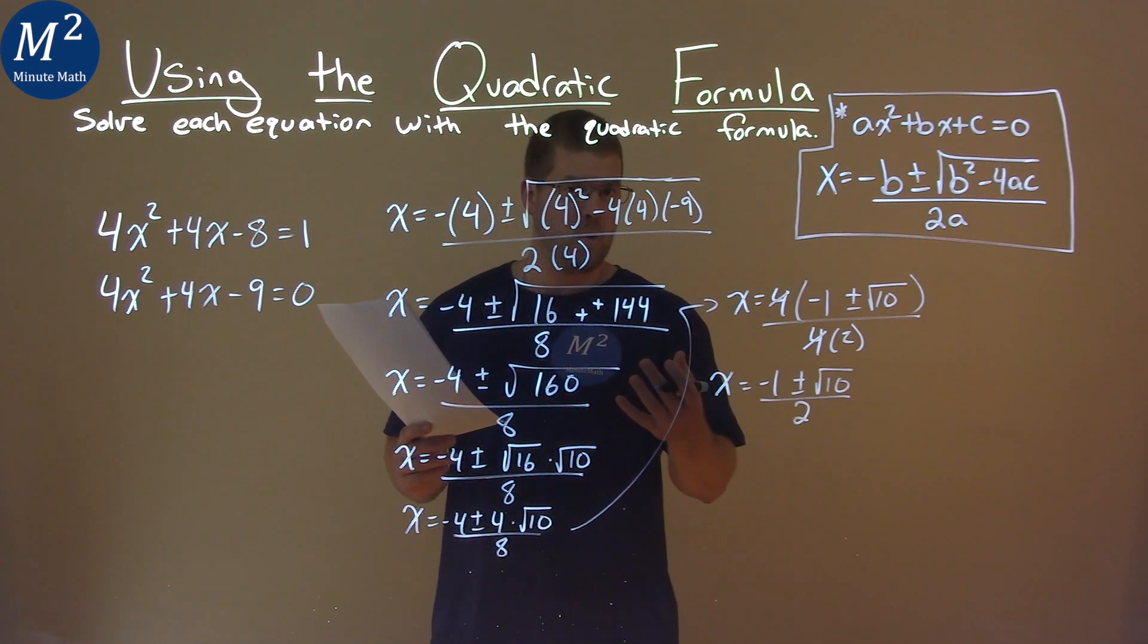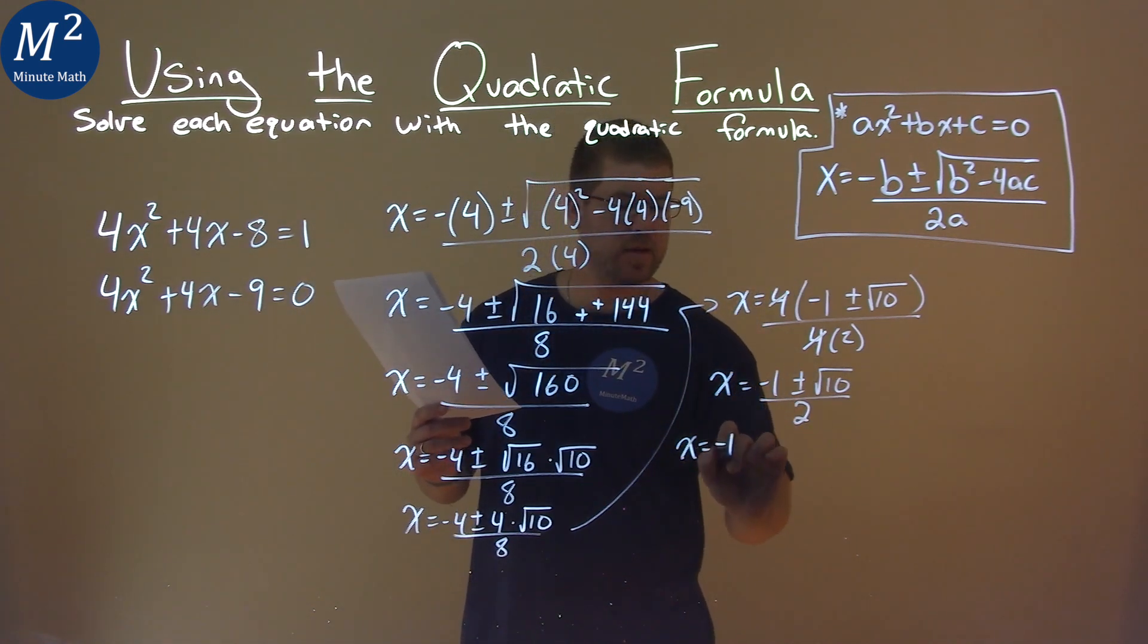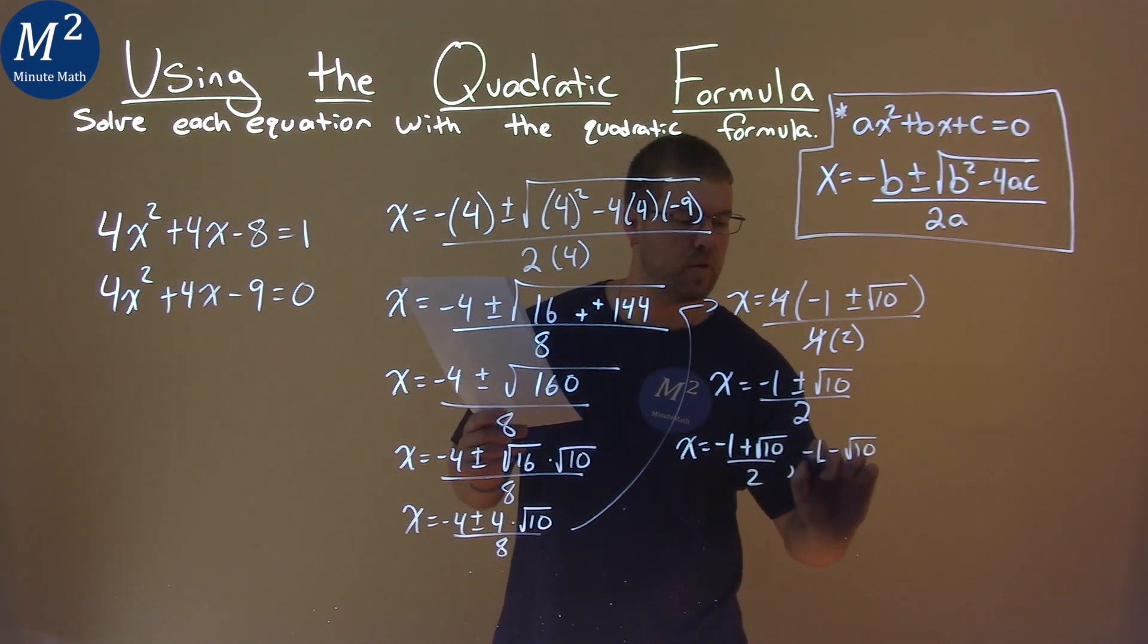This doesn't really simplify anymore, so we can write this now as two different statements, the plus and the minus. So, x equals negative 1 plus square root of 10 over 2, and x equals negative 1 minus square root of 10 over 2.